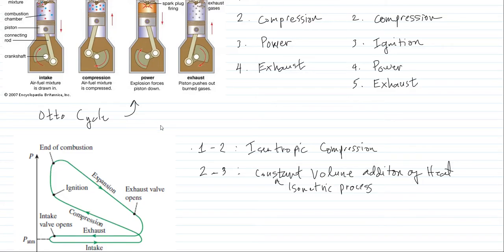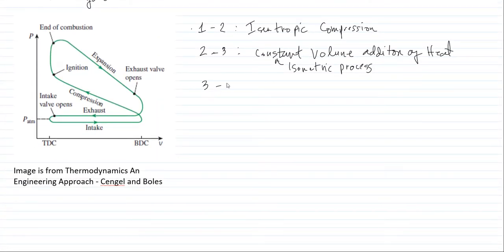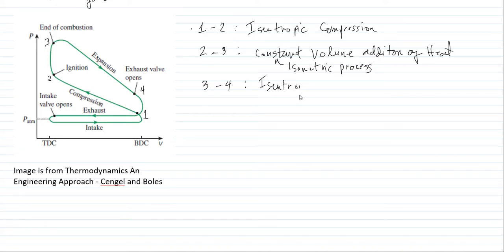Then the piston goes down from the top dead center because there is an explosion and power is produced. This corresponds to points 3 to 4, which is what we call the isentropic expansion. No heat is added during the isentropic expansion from point 3 to point 4.